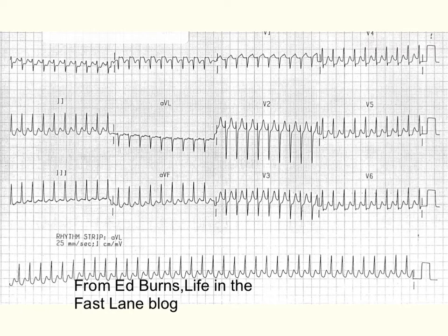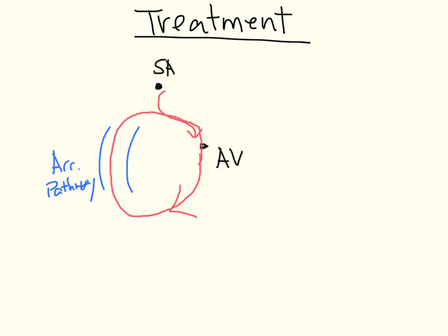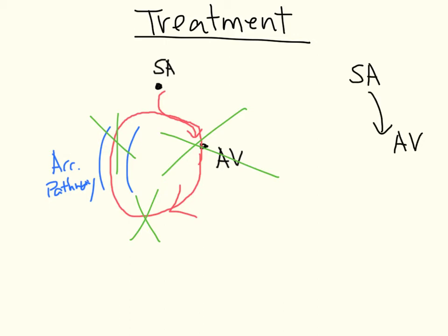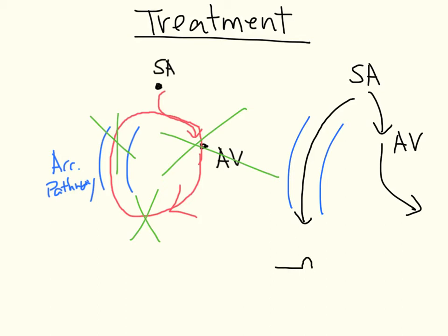This is what the ECG should look like — fast, regular, and narrow. In terms of treatment, all we have to do is block this circuit going around the AV node through the accessory pathway. We do this by vagal maneuver or blocking the AV node — that resets the circuit. Then impulses should travel from the SA node directly down to the AV node without going through the circuit again. Since the accessory pathway still exists, impulses will still also go through it, causing that delta wave we saw earlier.